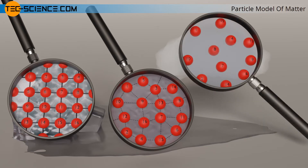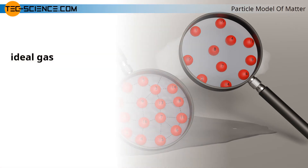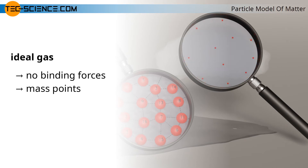In gases, the intermolecular forces are significantly lower than in liquids. The individual particles therefore experience almost no binding forces and can move relatively freely in space. This is also the reason why gas escaping from a gas cylinder is quickly spread throughout the room. In an idealized model conception of gases, it is even assumed that the particles do not exert any binding forces and can be assumed to be mass points, meaning they are regarded as particles without spatial dimensions.